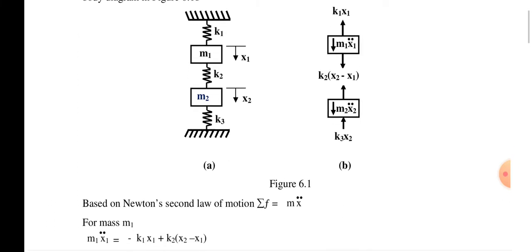The configuration has springs k1, k2, k3 and masses m1, m2 with displacements x1 and x2. The inertia force of mass m1 is m1·x1̈, the spring force due to k1 is k1·x1, the spring force due to spring 2 is k2·(x2 − x1), and the spring force due to spring 3 is k3·x2. The inertia force due to mass m2 is m2·x2̈.